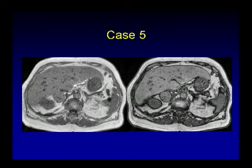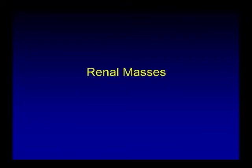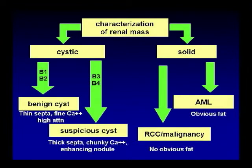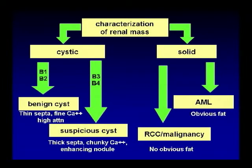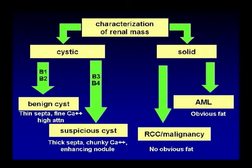The answers to these cases will be embedded in the lecture. So let's first talk about renal mass characterization. You first have to decide whether it's cystic or solid. If it's cystic and it has benign features such as thin septa, fine calcification, or high attenuation, these are benign cysts, Bosniak type 1 or 2.